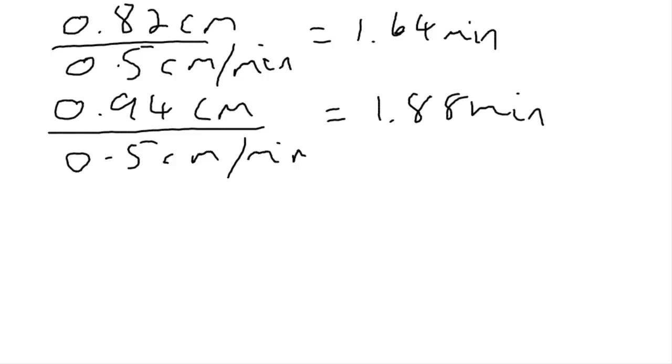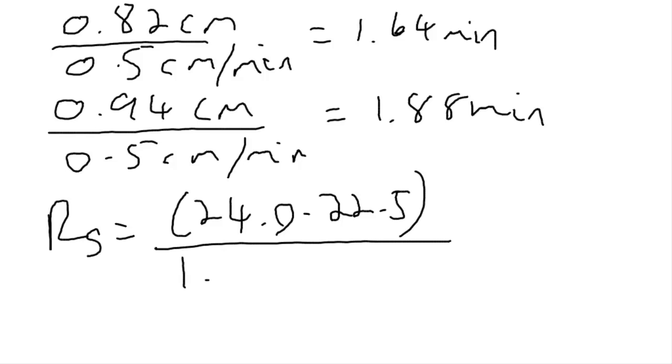Now we can use our equation to look at the difference between the retention times. So 24 minus 22.5 divided by the widths added together, so that's 1.64 plus 1.88. That gives us our resolution. So the resolution ends up being 0.43. And normally, we consider it resolved to be 1.5 or above, so these would not be considered resolved.